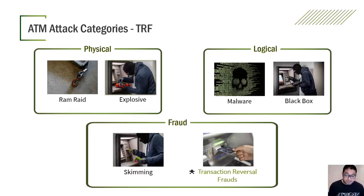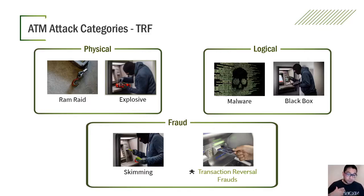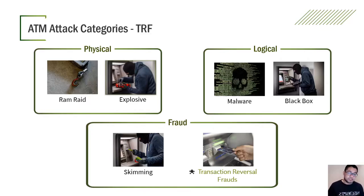Some of the ATM attack categories I have seen are physical, logical, and fraud. In the physical category, they damage the hardware — for example, a RAM raid or an explosive — to get the money. In the logical category, they don't mess with the hardware per se; they manipulate the ATM software, for example using a black box or malware. In the fraud category, for example skimming targets the customers, not the ATM itself. Transaction reversal fraud is another fraud type we are going to discuss today.